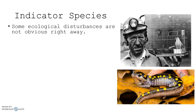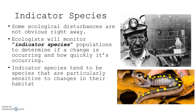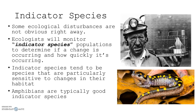Indicator species: some ecological disturbances are not obvious right away. Ecologists monitor indicator species populations to determine if a change is occurring and how quickly. Indicator species tend to be particularly sensitive to changes in their habitat — like the canary in a coal mine, where birds were sent down to test whether the air was breathable. Amphibians are good indicator species because they live both on land and in water, so if something starts to go wrong with amphibians, it's usually the first sign of an ecological disturbance.